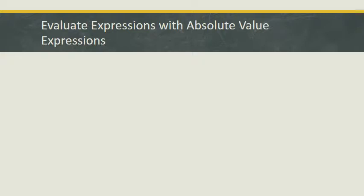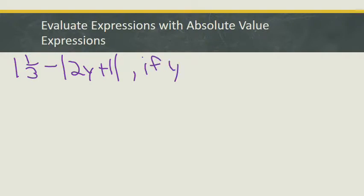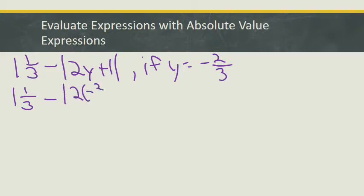Okay, right quick, let's look at one more where we're evaluating an absolute value expression. Here I've got 1⅓ minus the absolute value of 2y plus 1, if y equals minus 2/3. So I'm going to substitute in this minus 2/3 for the y. When I do, I'm going to rewrite this: 1⅓ minus the absolute value of 2 times minus 2/3, plus 1.